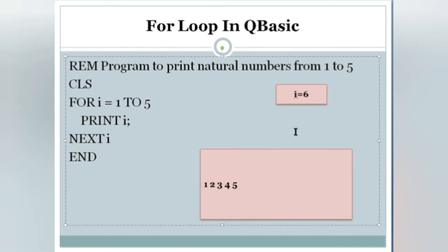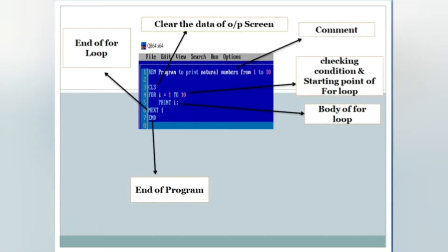If you want to print one to ten, you write ten. If you want to print one to fifteen, write fifteen. If you want to print one to hundred or one to thousand, just change that value. In the same way it works — for now we are printing five.